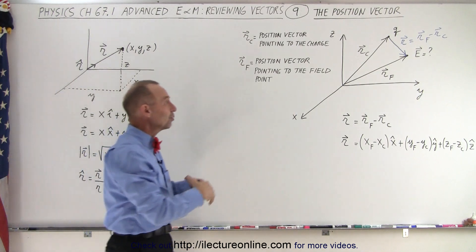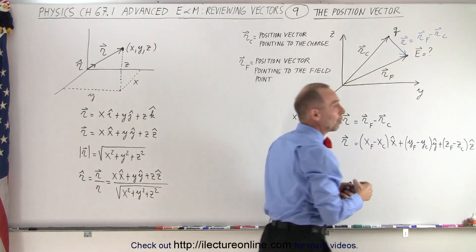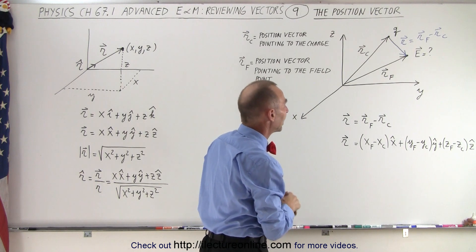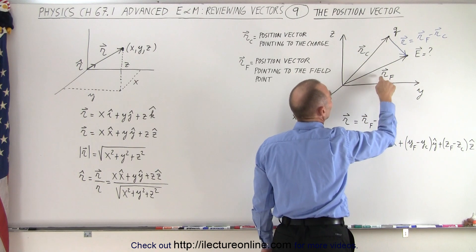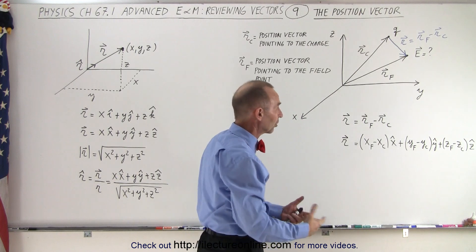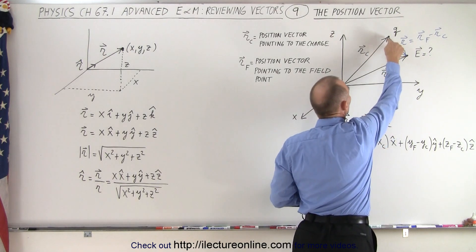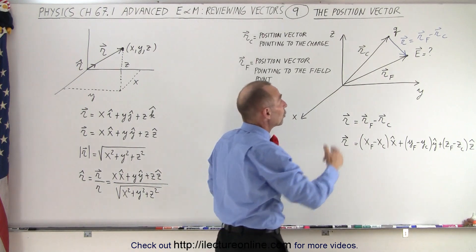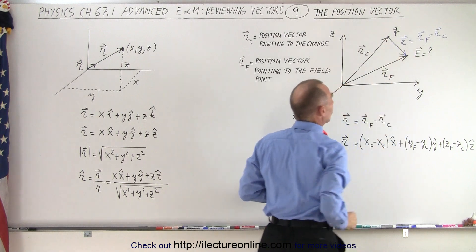Now, if we have a three-dimensional space, and in that space we have a source charge, and we have a point at which we want to determine the electric field at that point due to that charge — we can have a position vector pointing to the charge, r sub c, and a position vector pointing to the point in space where we want to calculate the electric field, call it r sub f. Then we want a vector that points from the charge to the point in space where we want to know the electric field — that's the vector of importance. Let's call that r, the position vector of the field point relative to where the charge is located.